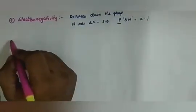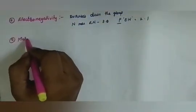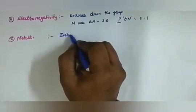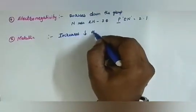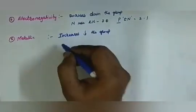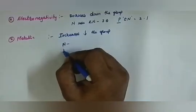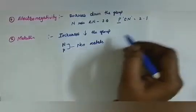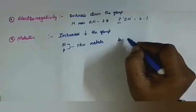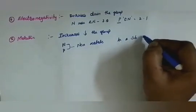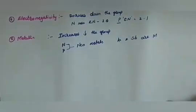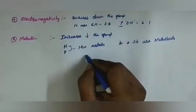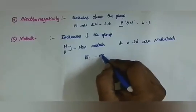Coming to the metallic property: it increases down the group. Nitrogen and phosphorus are both non-metals, arsenic and antimony are metalloids, whereas bismuth is a metal.